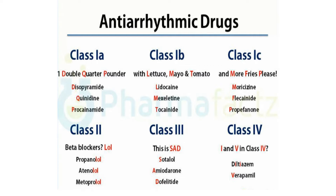Class 1B drugs are also sodium channel blockers, but they shorten the action potential. Examples — the mnemonic is 'lettuce, mayo, and tomato': lidocaine, mexiletine, and tocainide. Another mnemonic is LMP, last menstrual period: L is lidocaine, M is mexiletine, and P is phenytoin.